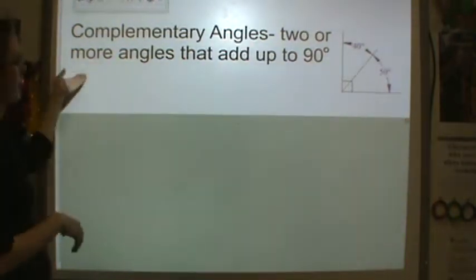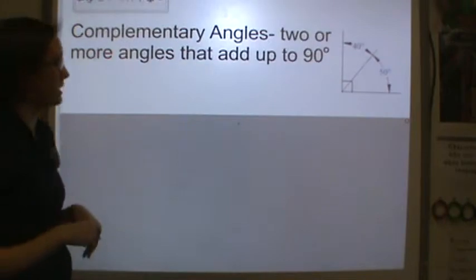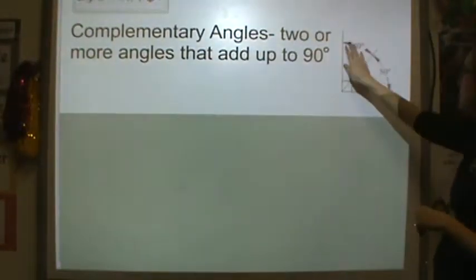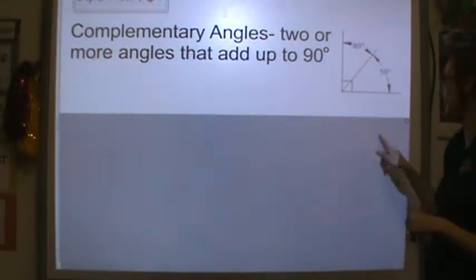Complementary angles are two or more angles and they add up to 90 degrees. So the example here is we have a complementary angle, we have 40 degrees and 50 degrees, and together they make a right angle.